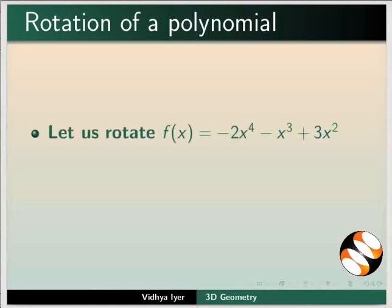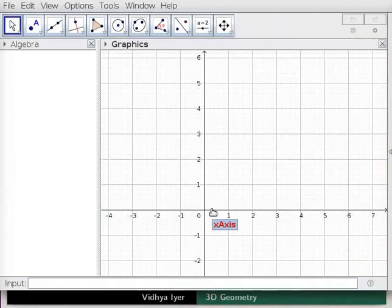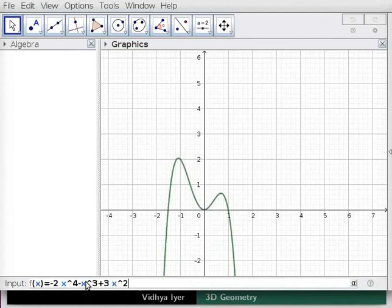Rotation of a polynomial. Let us rotate f(x) equals minus 2x raised to 4 minus x cubed plus 3x squared. We will rotate the part that lies in the second quadrant in xy plane about the x axis. I have already opened a new window in GeoGebra. We will initially work with algebra and 2D graphics views and open 3D graphics view later. In the input bar, type the following line. To type the caret symbol, hold shift key down and press 6.